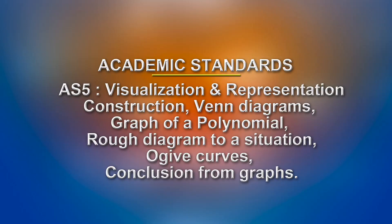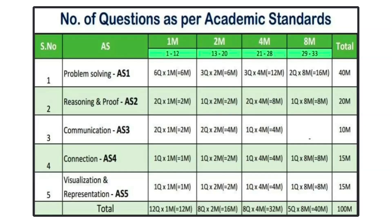Coming to the weightage of each academic standard: for Problem Solving AS1, you will have 40 marks; for Reasoning and Proof AS2, you will have 20 marks; for Communication AS3, you will have 10 marks; for Connection AS4, 15 marks; and for Visualization and Representation AS5, you will have 15 marks. Totally a 100 marks paper.